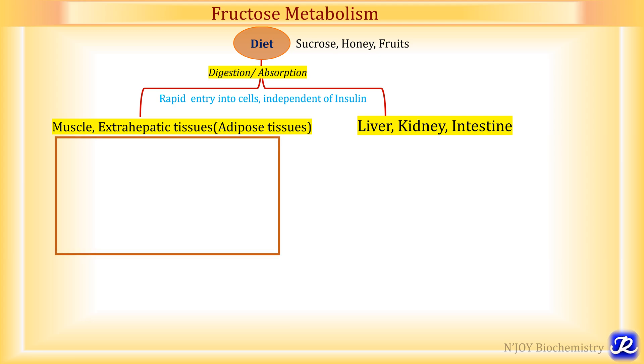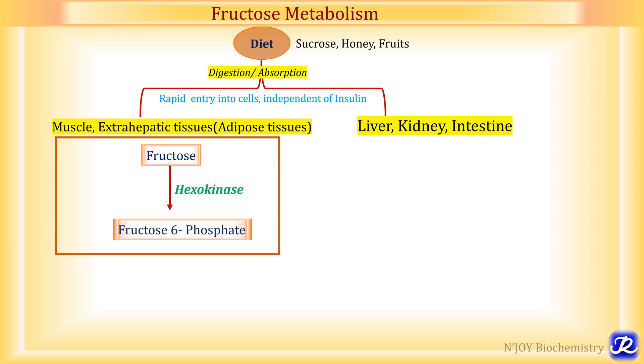This is a schematic representation of a cell. Once fructose enters the cell — and the entry is independent of insulin — it is converted into fructose 6-phosphate, meaning fructose is phosphorylated by the enzyme hexokinase. The fructose 6-phosphate has various fates: it can enter glycolysis and be converted into pyruvate, because fructose 6-phosphate gets converted to fructose 1,6-bisphosphate and then glycolysis occurs. This is one of the fates of fructose 6-phosphate.